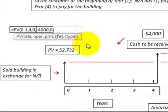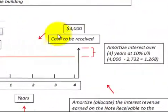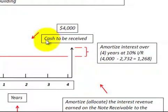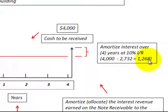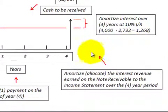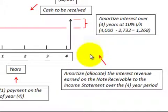So what we have here is a present value of $2,732 for the $4,000 cash that we're going to receive four years into the future. The interest we would calculate here would be based on the $4,000 future value of this note minus its present value of $2,732, giving us amortized interest of $1,268. We have to amortize or allocate that interest revenue earned on this note receivable to the income statement over the four-year period.